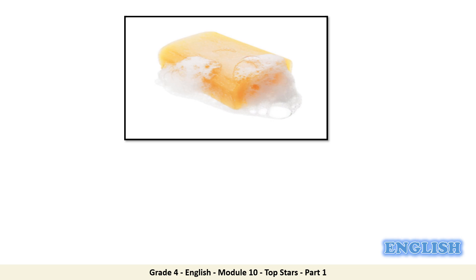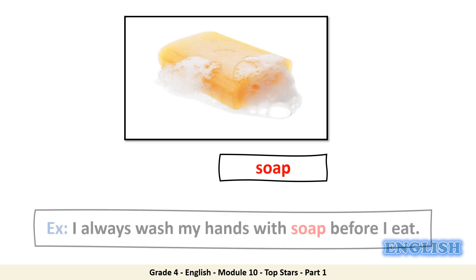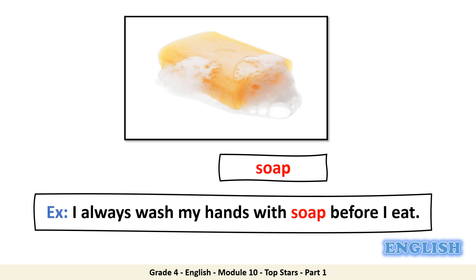And here we come to the last picture. It's very easy — it's something that you can find in the toilet and we use it every day. Well done — soap. Let's use the word soap in a sentence: I always wash my hands with soap before I eat. Do you know what part of speech is the word soap? Great job, it's a noun.